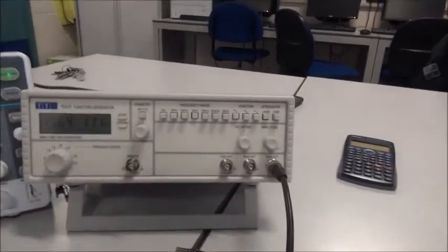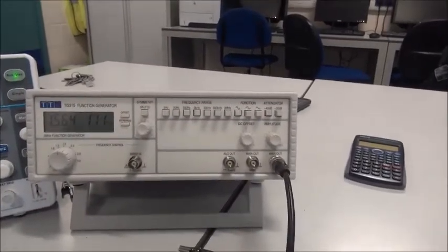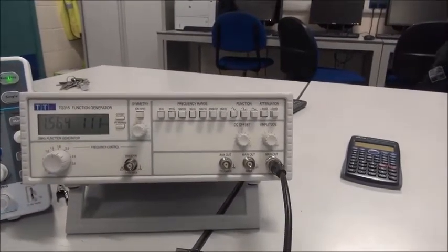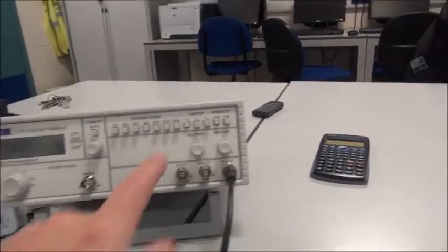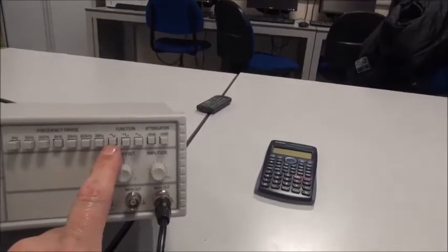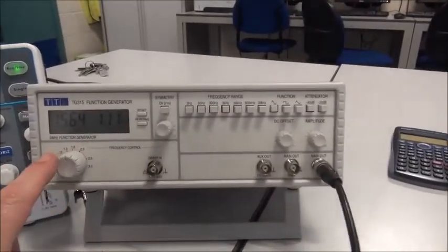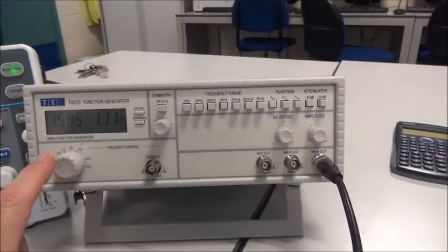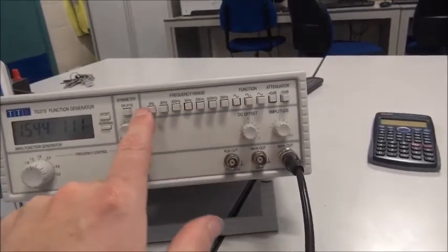Now, lots of controls on the function generator, of course, but we're asked to set up a sine wave, so it's going to be a sine wave over here. I'm going to press that button there. It's a sine wave, and it needs to have a frequency. There's a frequency dial here, and these are the frequency buttons here.